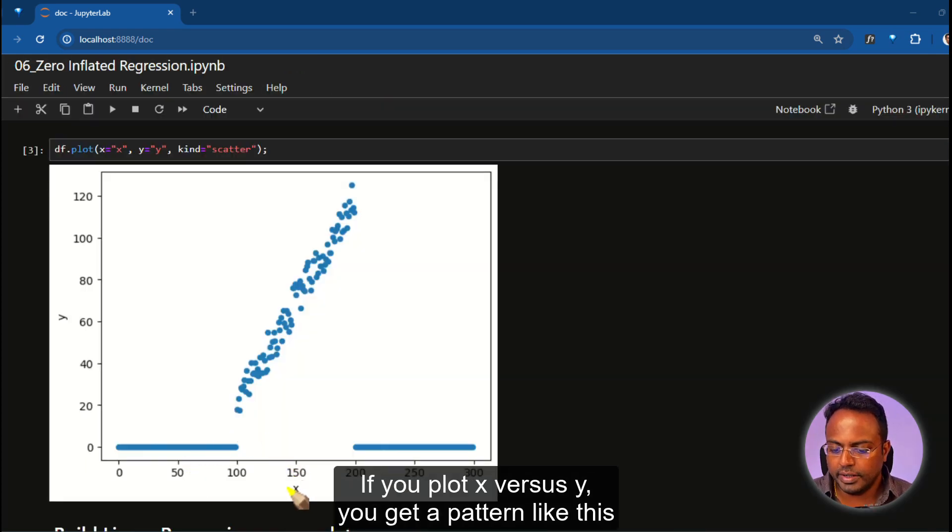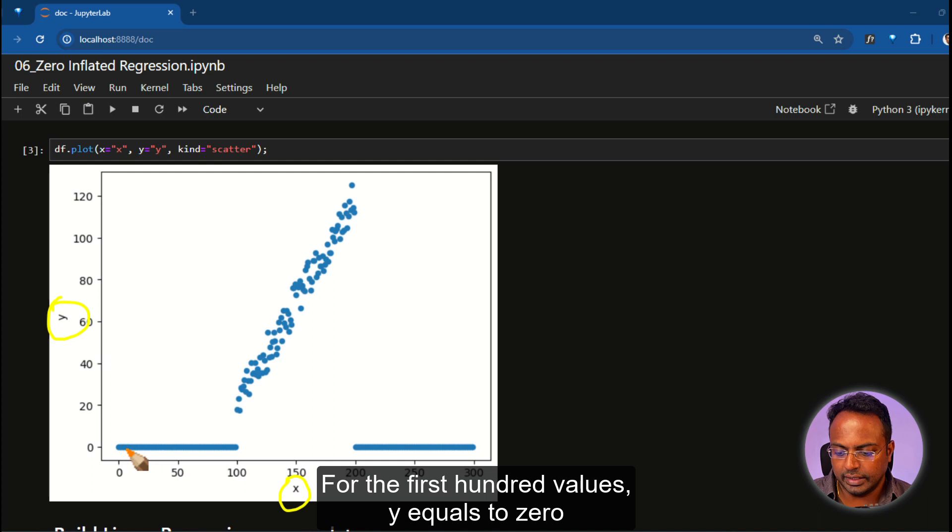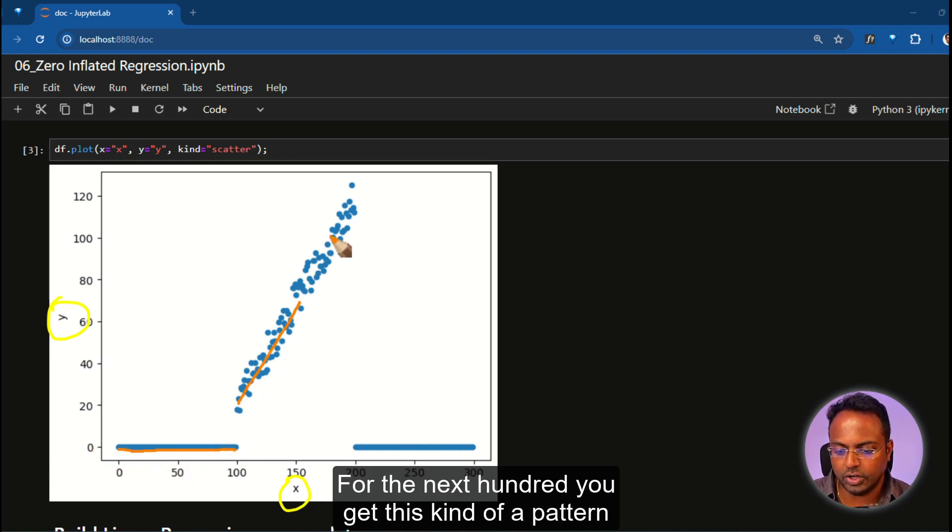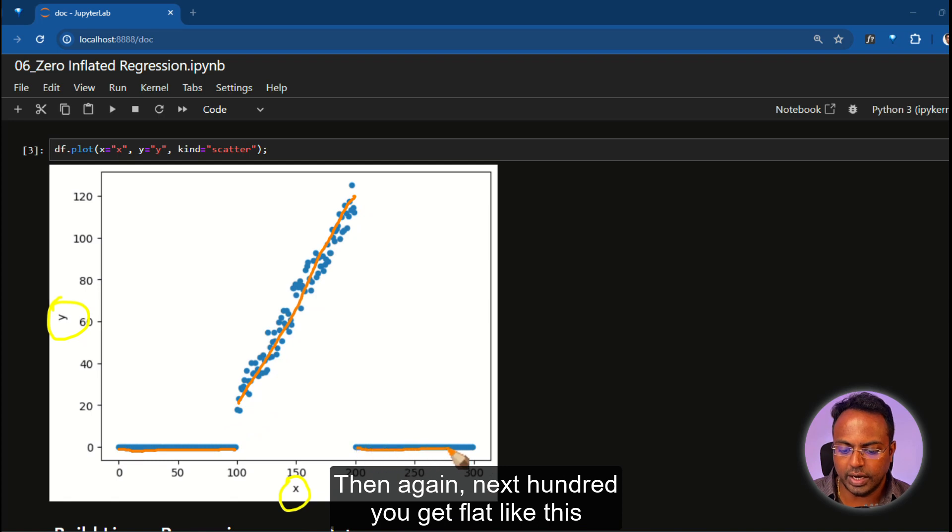If you plot X versus Y, you get a pattern like this. For the first 100 values, Y equals zero. For the next 100, you get this kind of pattern. Then again, next 100, you get flat like this.